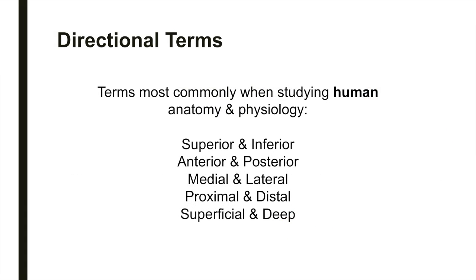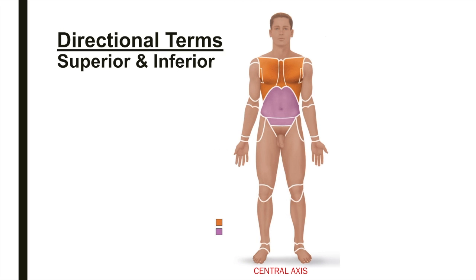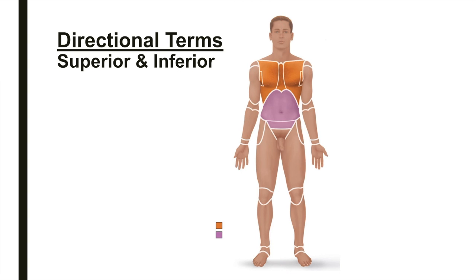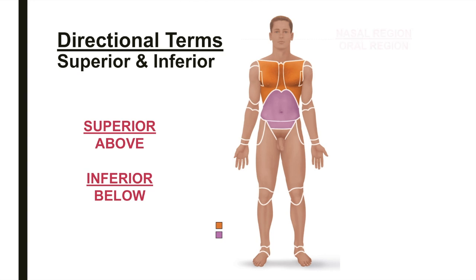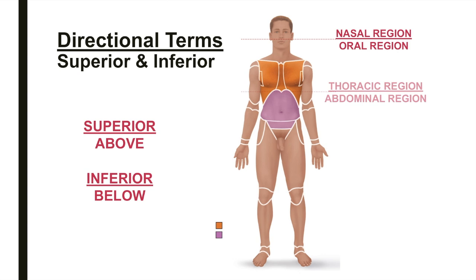Directional terms help us describe the positions of structures relative to other structures or locations in the body. Here are the directional terms most commonly used when studying human anatomy and physiology. Superior and inferior refer to the position of a structure along the central axis of the body. Superior means above — the nasal region, or nose, is superior to the oral region, or mouth. Inferior describes something that is below another structure; the abdominal region is inferior to the thoracic region.